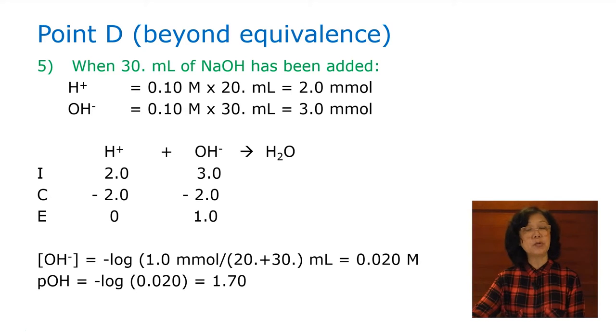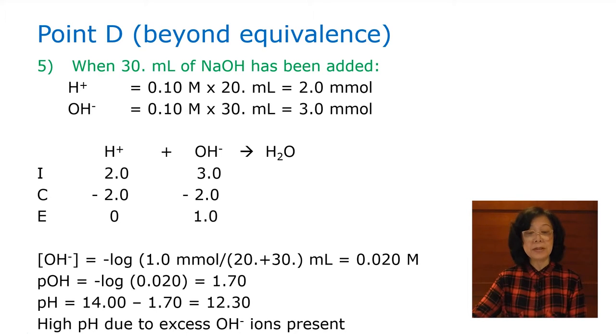So, the pOH is 1.70, and the pH, by subtracting pOH from 14, is 12.30. The pH is quite high because there's excess hydroxide ion present.